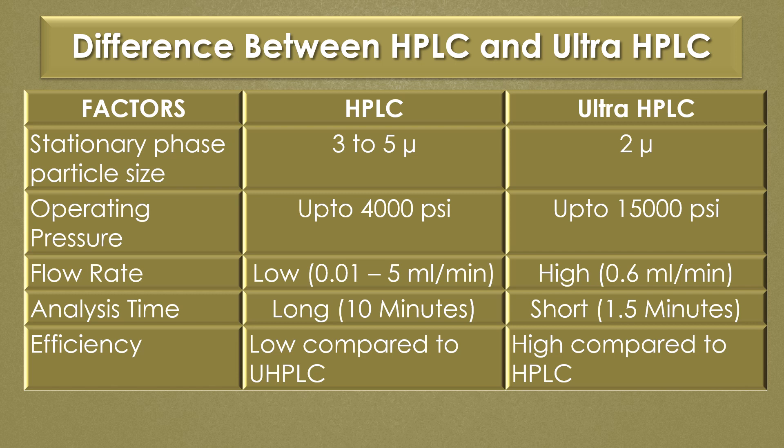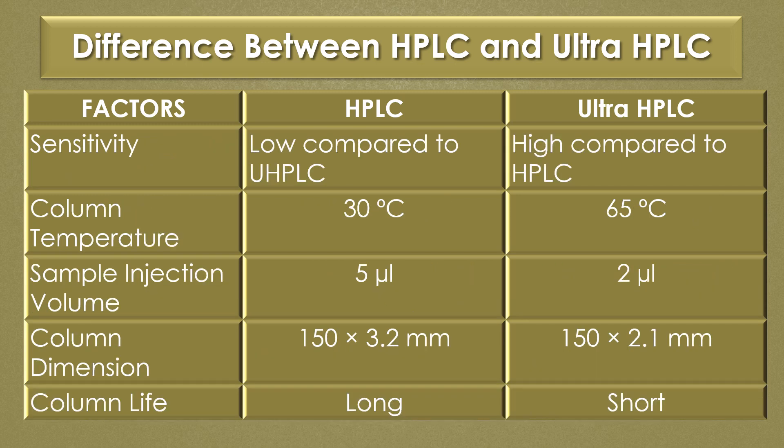The efficiency of HPLC is slow when compared to UHPLC, and the efficiency of Ultra HPLC is high when compared to HPLC. The sensitivity of HPLC is low when compared to UHPLC, and the sensitivity of Ultra HPLC is high when compared to HPLC. The column temperature of HPLC is 30 degrees Celsius.